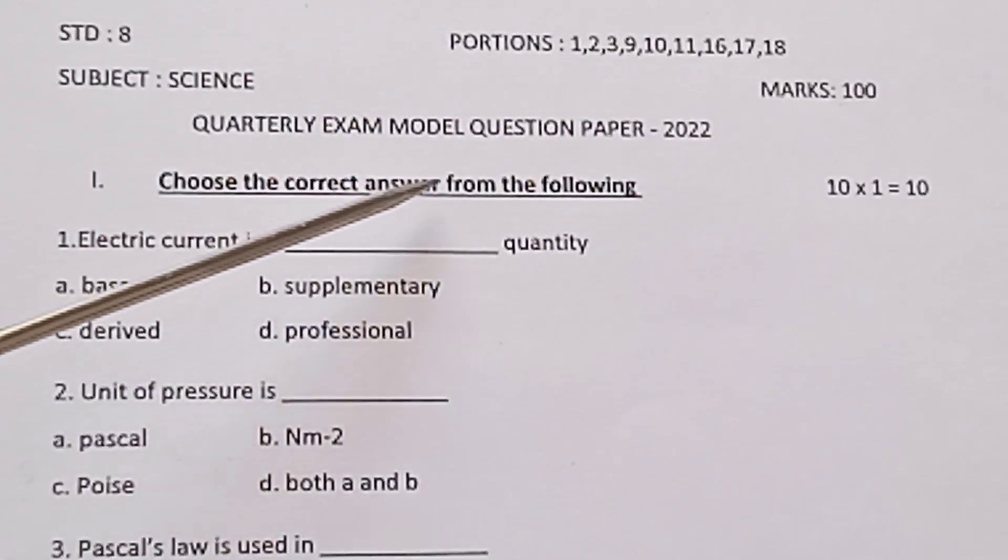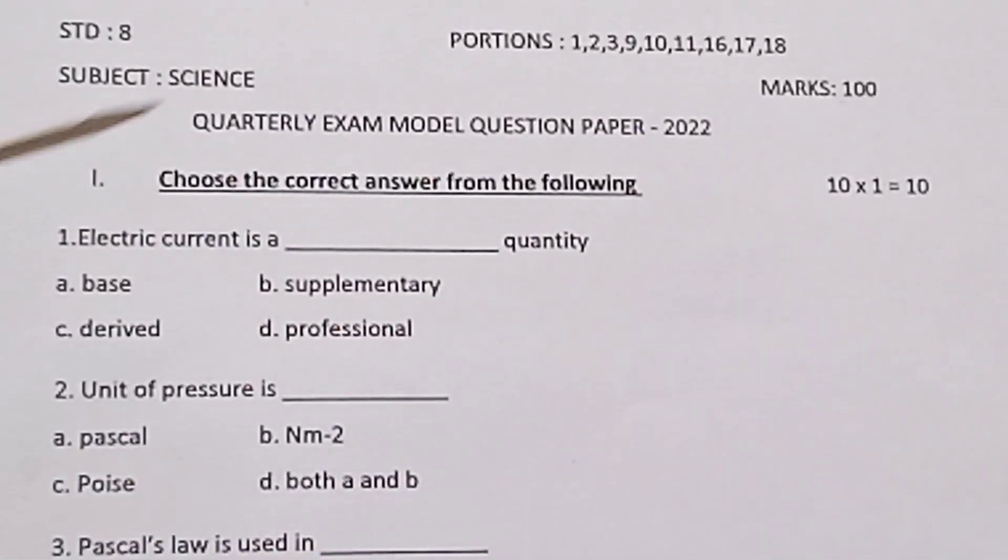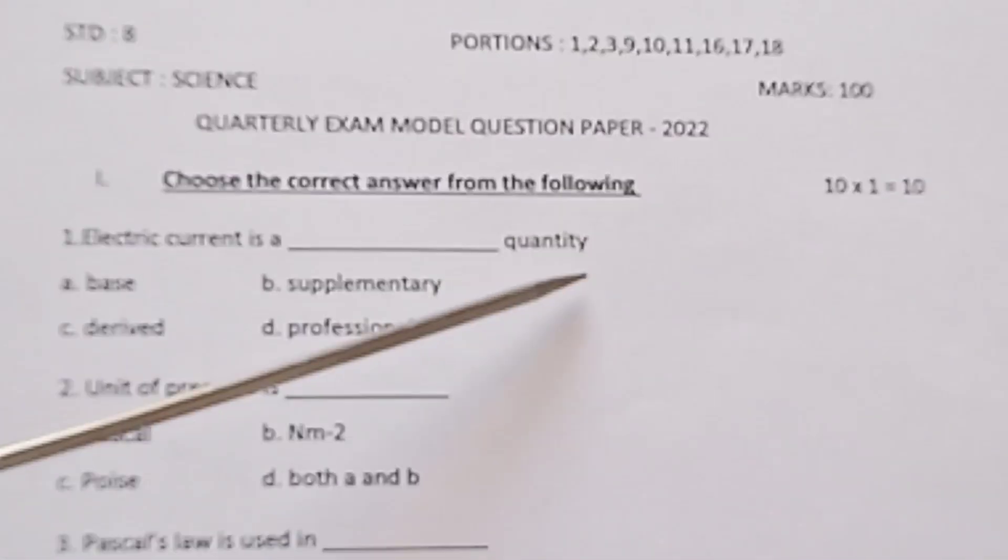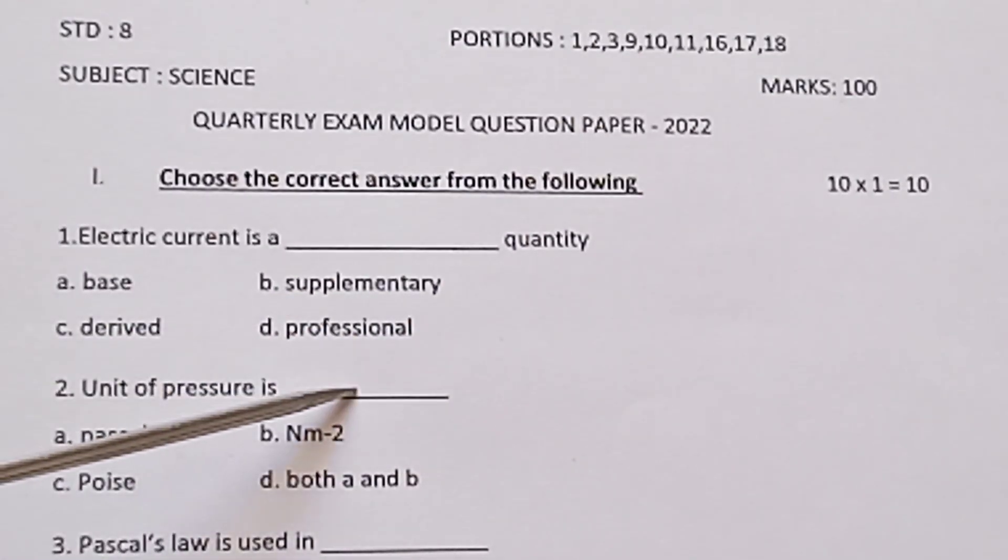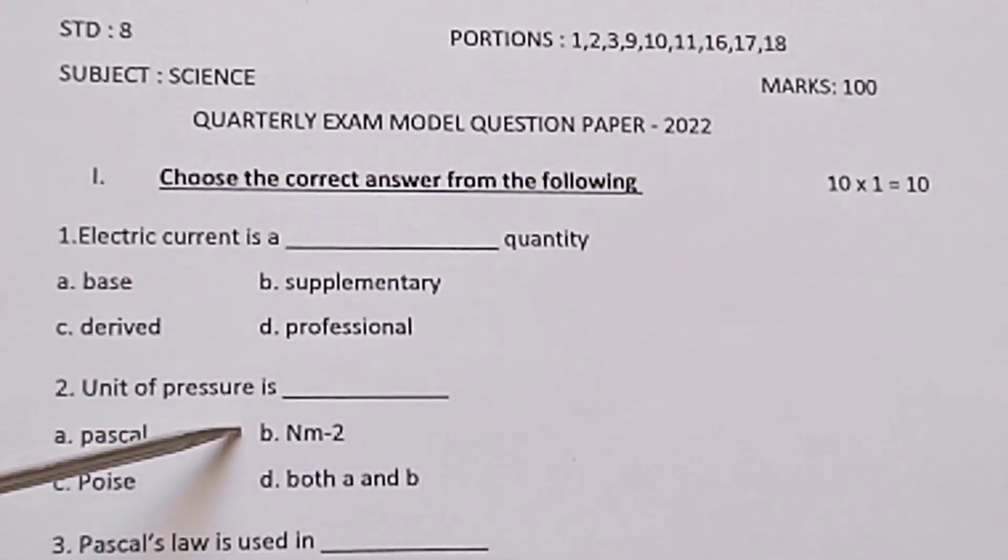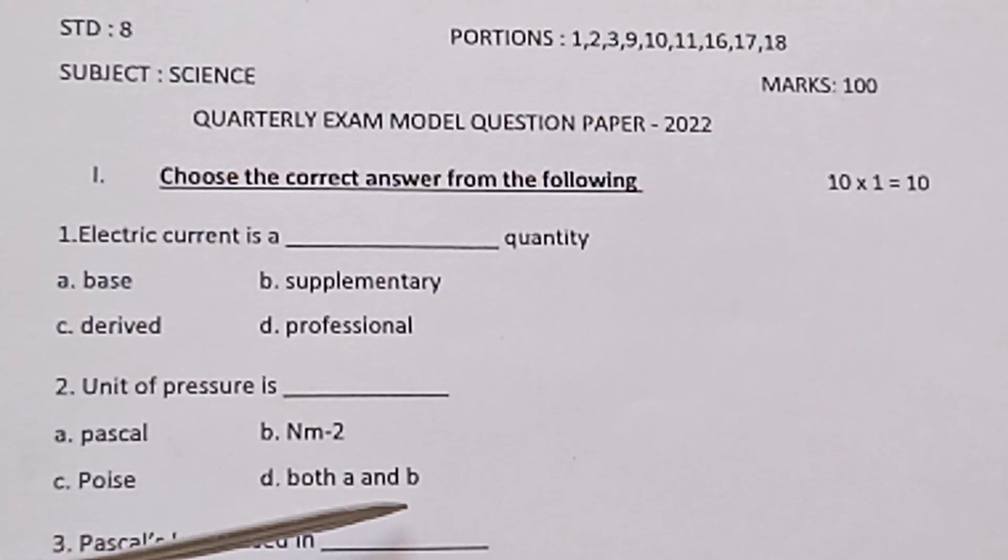Roman numeral 1, choose the correct answer from the following. Marks 10 into 1 is equal to 10. Electric current is a dash quantity. Base, supplementary, derived, professional. Unit of pressure is dash: Pascal, poise, both A and B.